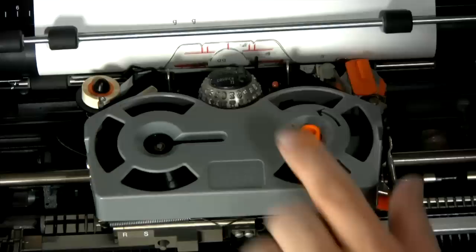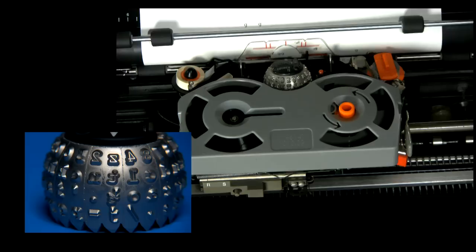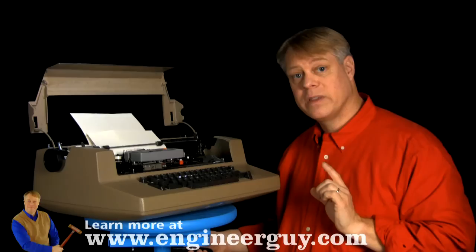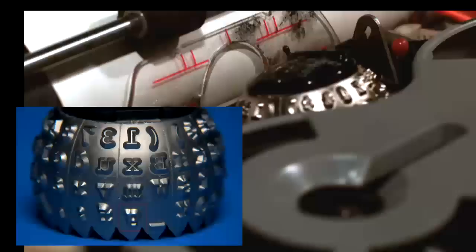The converter controls this ball. It distinguished the Selectric from all other typewriters. Instead of an individual lever for each letter, they're all gathered on the type element. Lowercase on one hemisphere, uppercase on the other. Now, a type of letter takes only a fraction of a second, but if slowed down, we can see the motion of the type element.